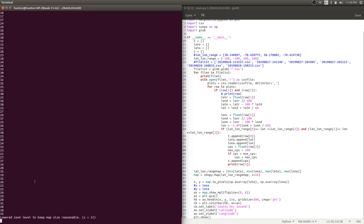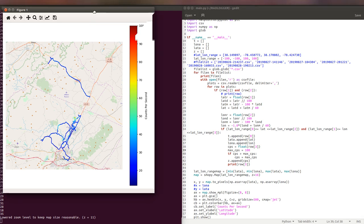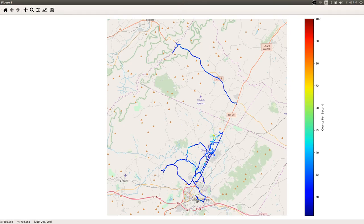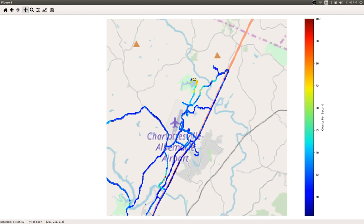It takes a little second to load everything, but once it does, you can see here's a map of Charlottesville. And you can see where I've driven and recorded data. So this scale goes from around 10 counts per second all the way up to 100. And there's some interesting features you can see.